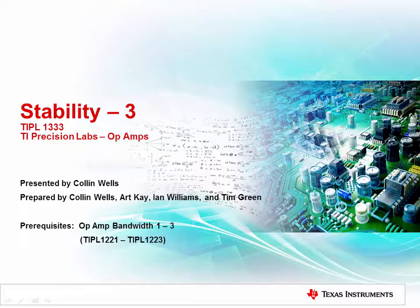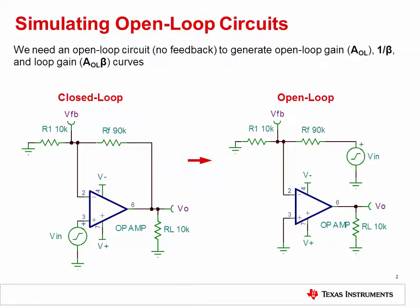Please be sure you've completed the lectures and problem sections for op-amp bandwidth 1 through 3 before proceeding. The AOL, 1 over beta, and loop gain curves required for rate of closure and phase margin measurements cannot be obtained from a circuit in a standard closed loop configuration.